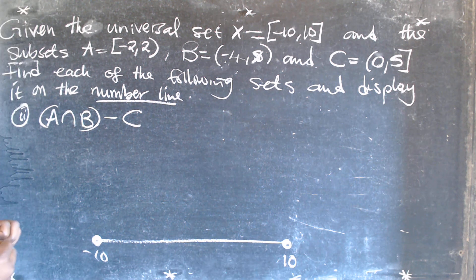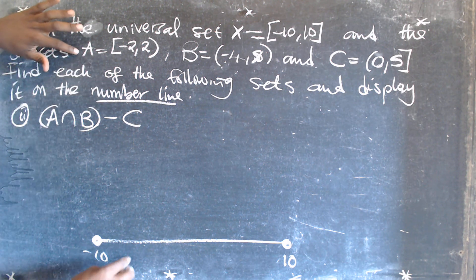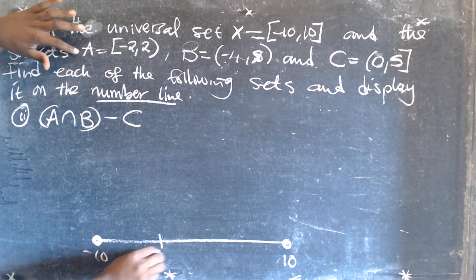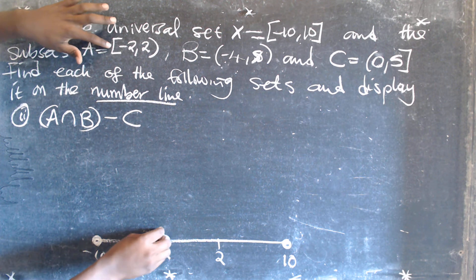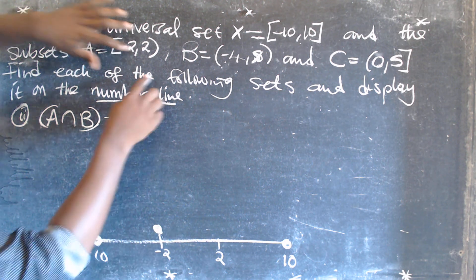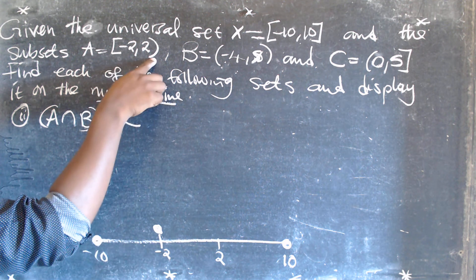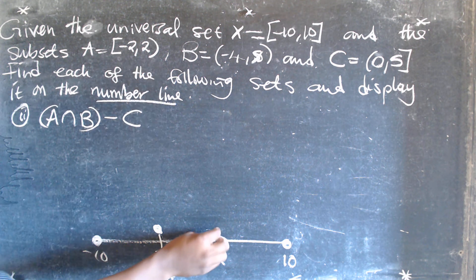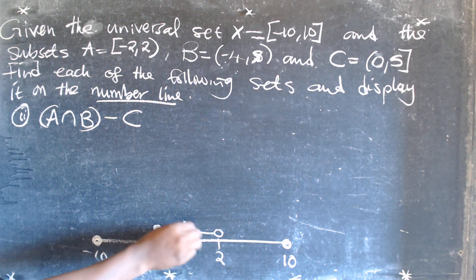We have A intersection B, so we can show A on the number line. Set A goes from negative 2 to 2, where negative 2 is part of the set (closed bracket) and 2 is not part of the set (open bracket). So this 2 is not part of the set. We show that this is set A.